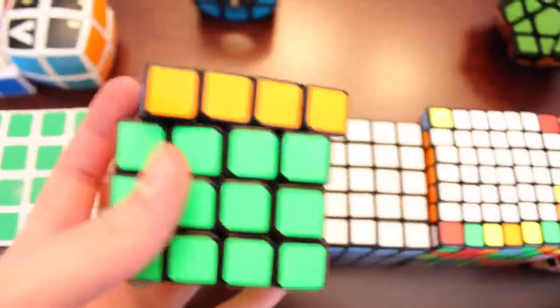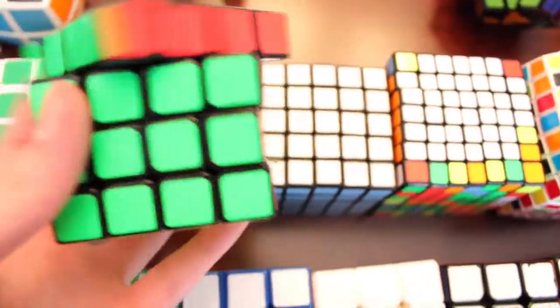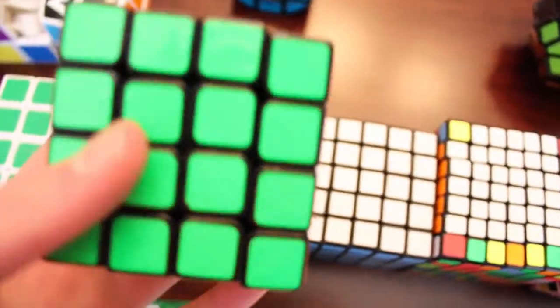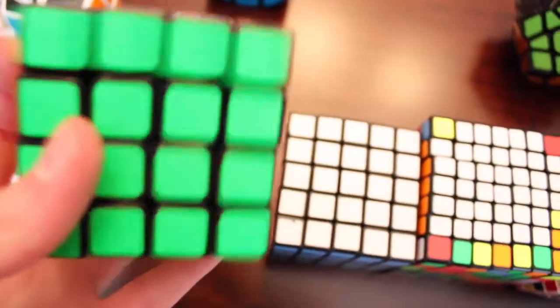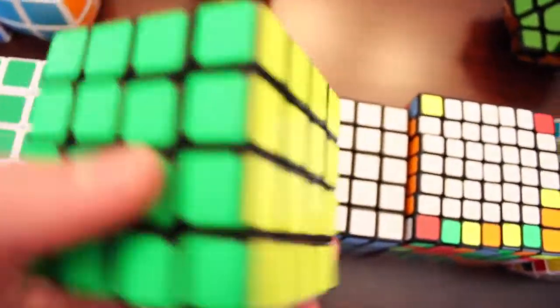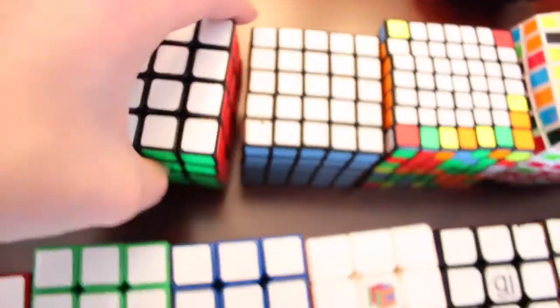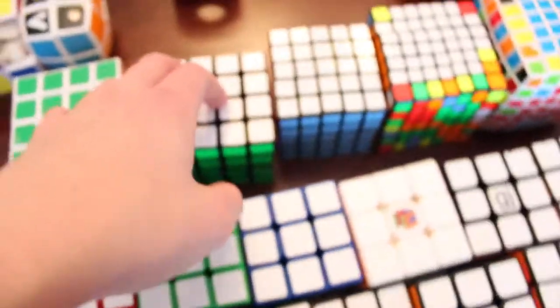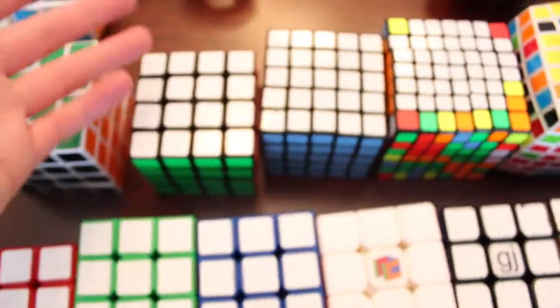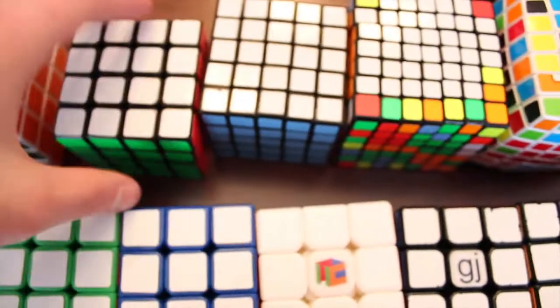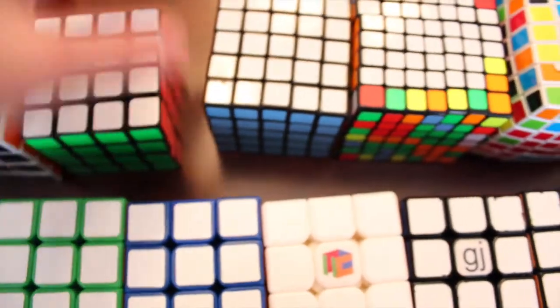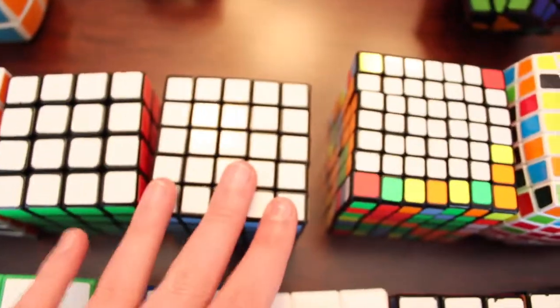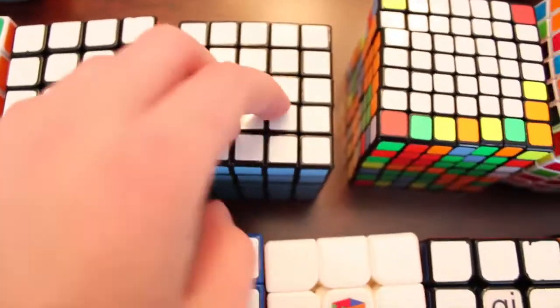And then we have the Moyu Aosu. This cube is pretty great. It does lock up a lot. But I don't know, I like it. But I didn't have enough money to actually buy the Mini Aosu or the Yuxin, which is what I kind of wanted to get. But you will see actually in the order. I don't want to tell you guys what I'm going to get, what I ordered. You'll see when I get it on Wednesday.